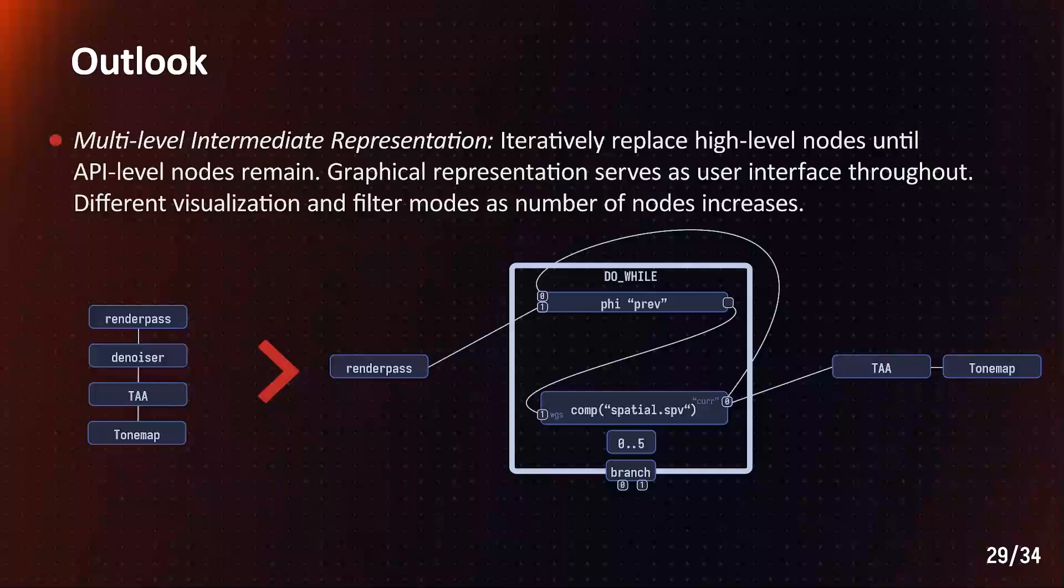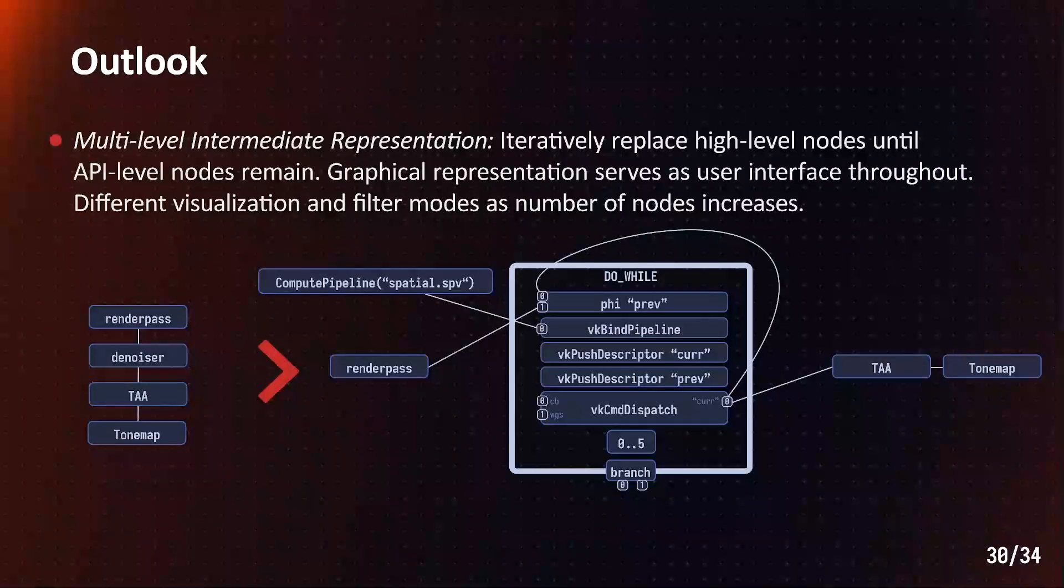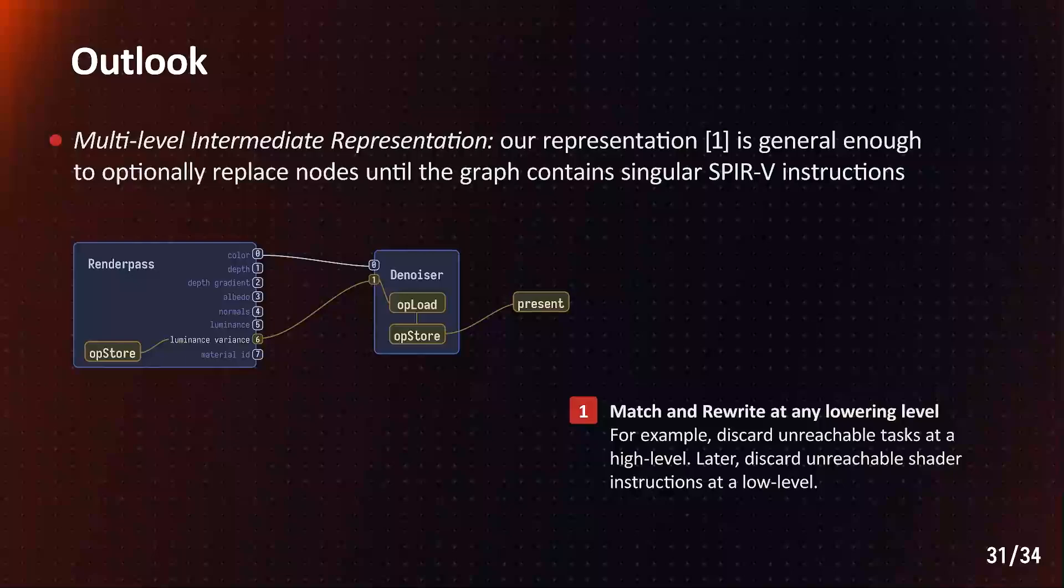So, we iteratively replace the high-level input until only API-level nodes remain. In this example, we first unfold an opaque SVGF denoiser pass to an iterative shader dispatch, before replacing our mid-level compute shader node with all the necessary Vulkan API commands. Our representation is general enough to represent SPIR-V in almost a one-to-one mapping. Therefore, we may even continue this replacement, replacing shader nodes with the individual SPIR-V shader instructions. This reveals the data dependencies between shaders down to the instruction level. Which, in turn, allows us to delete unused inputs and outputs from the graph by looking for realizable paths starting at some desirable side effect. This desirable side effect is the swap-chain present call in most rendering engines.